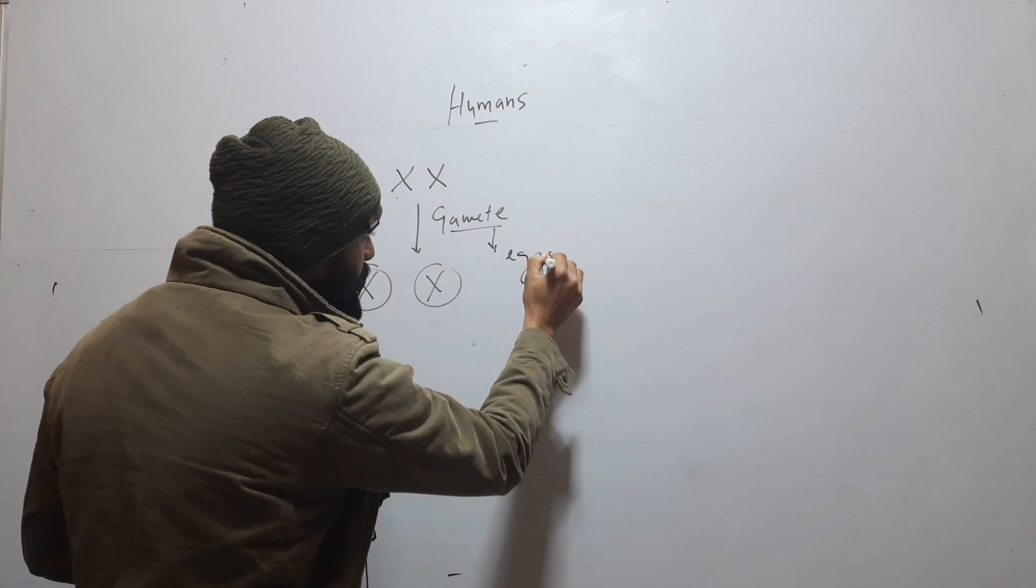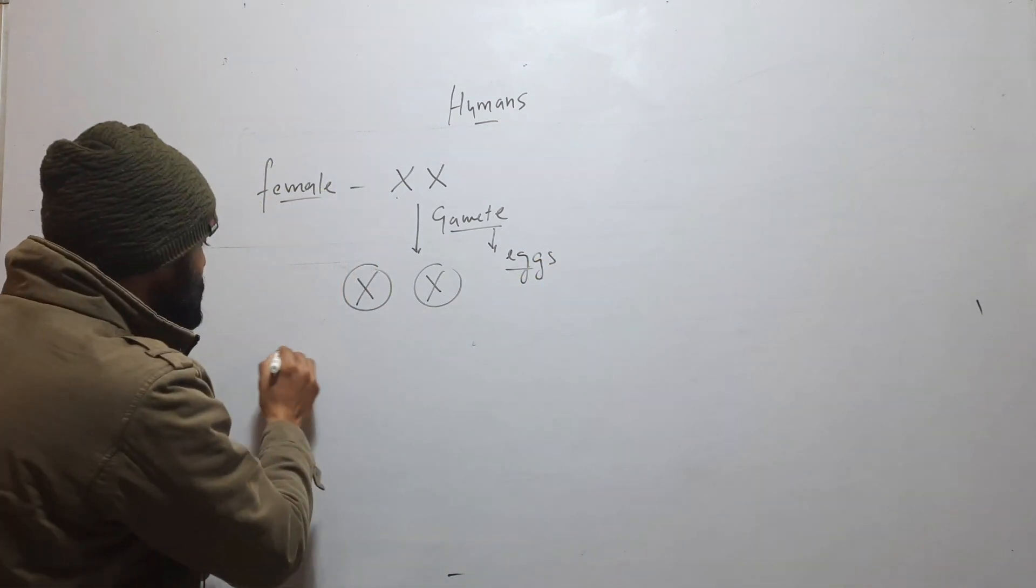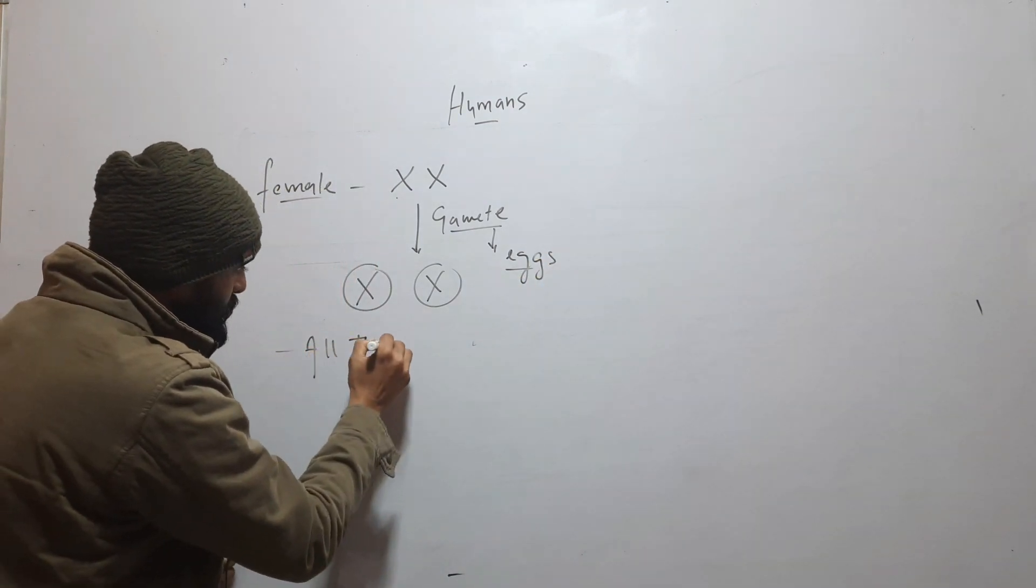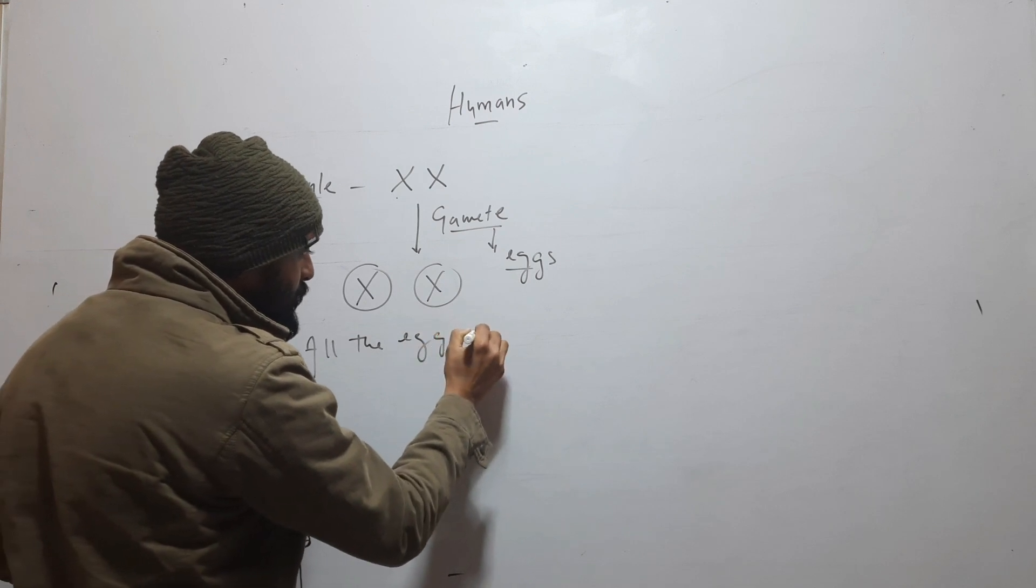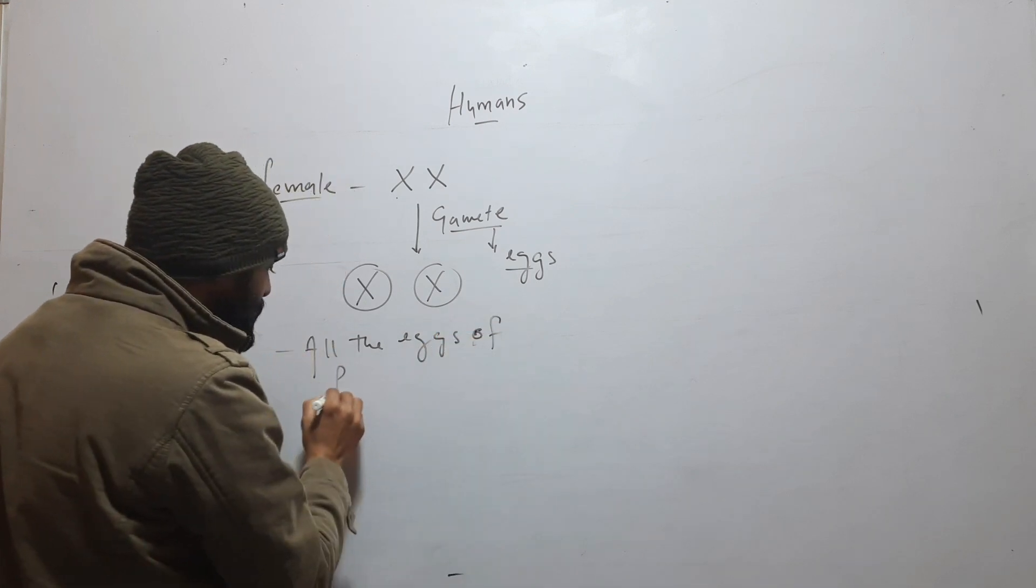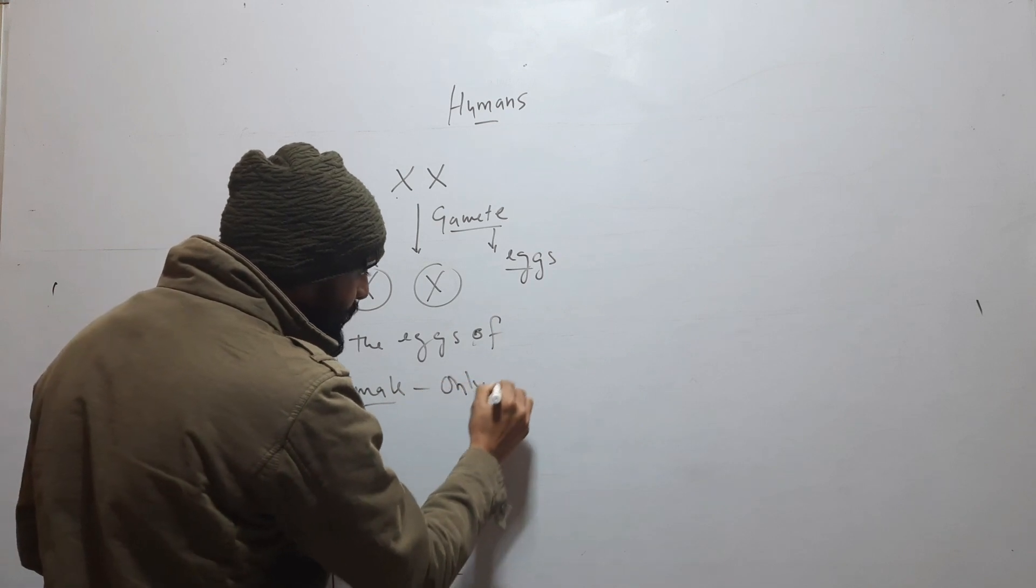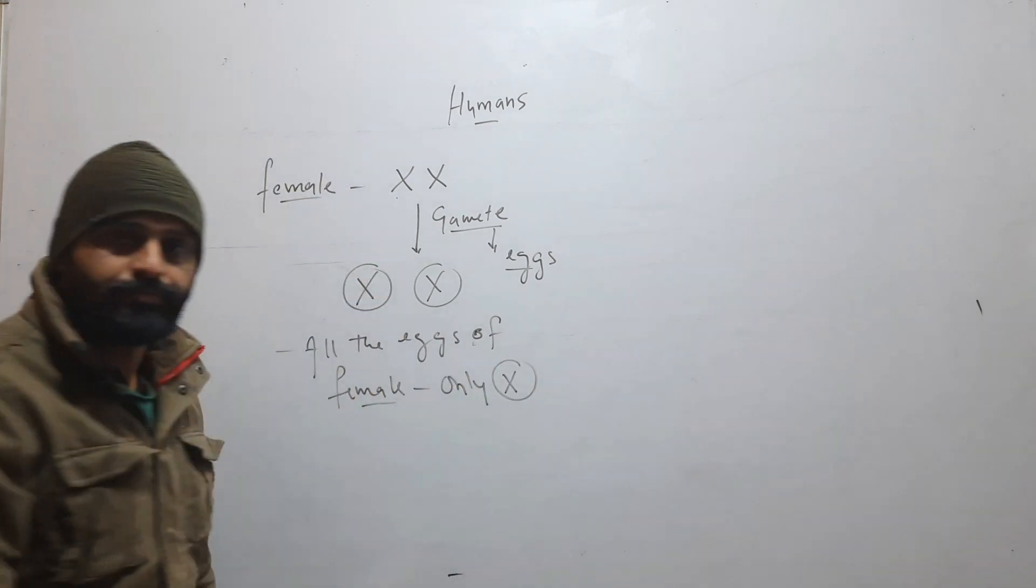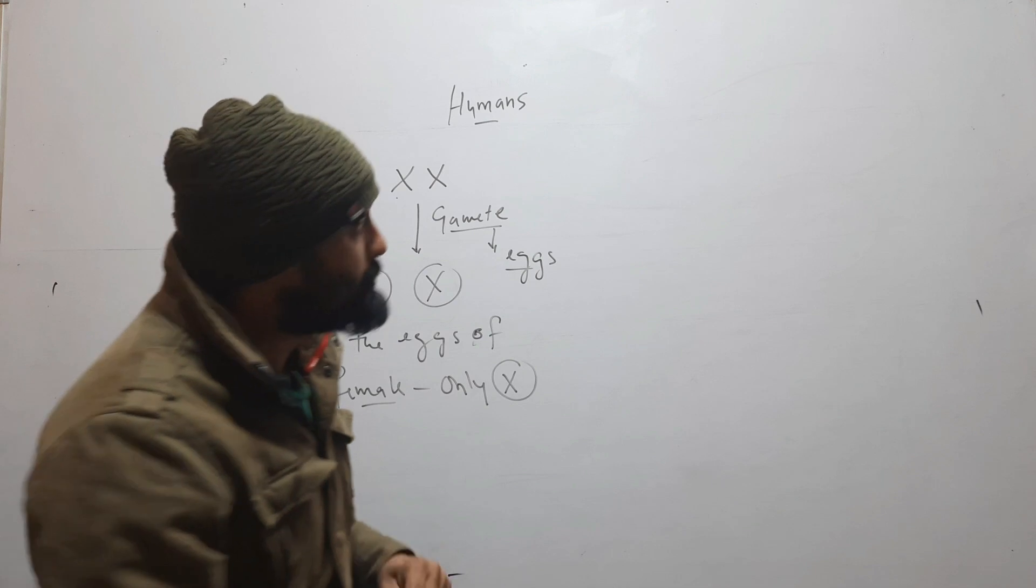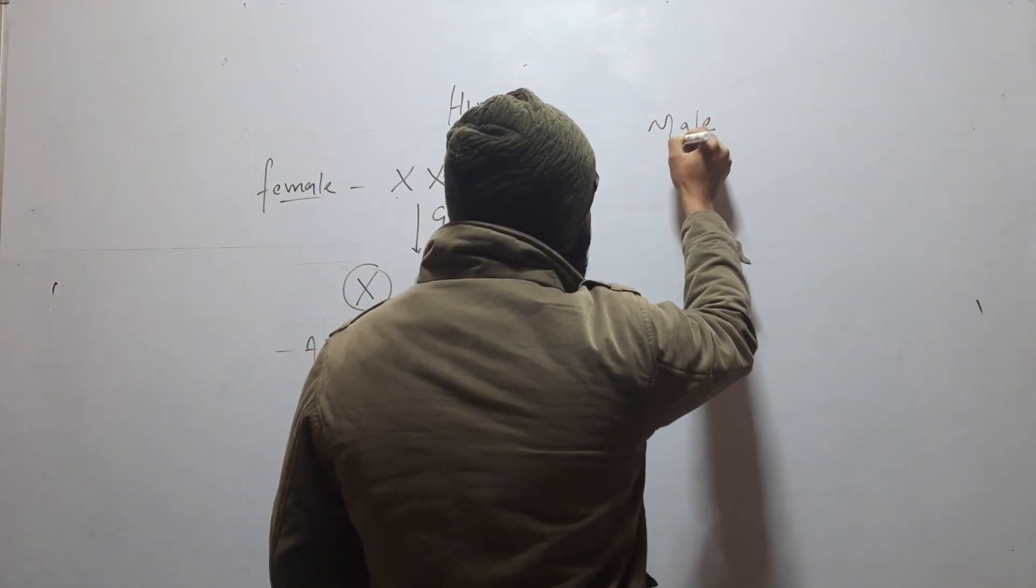So all the eggs of a female will have only X chromosome. But when we talk about males, males have two sex chromosomes.